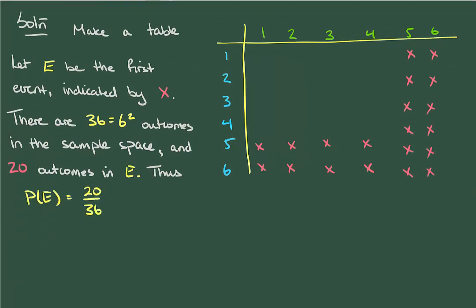Thus, the probability of the event E is 20 divided by 36, and that works out to about 56%.